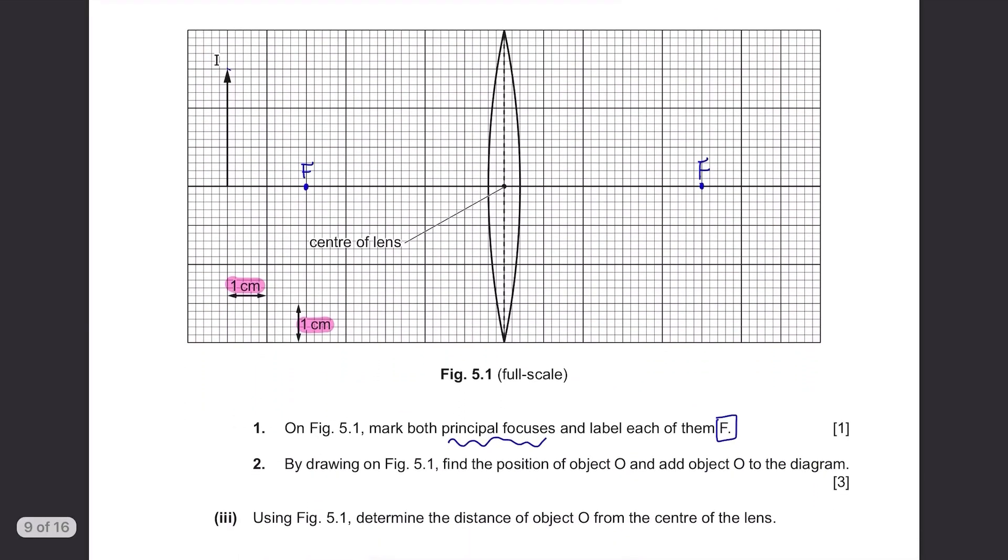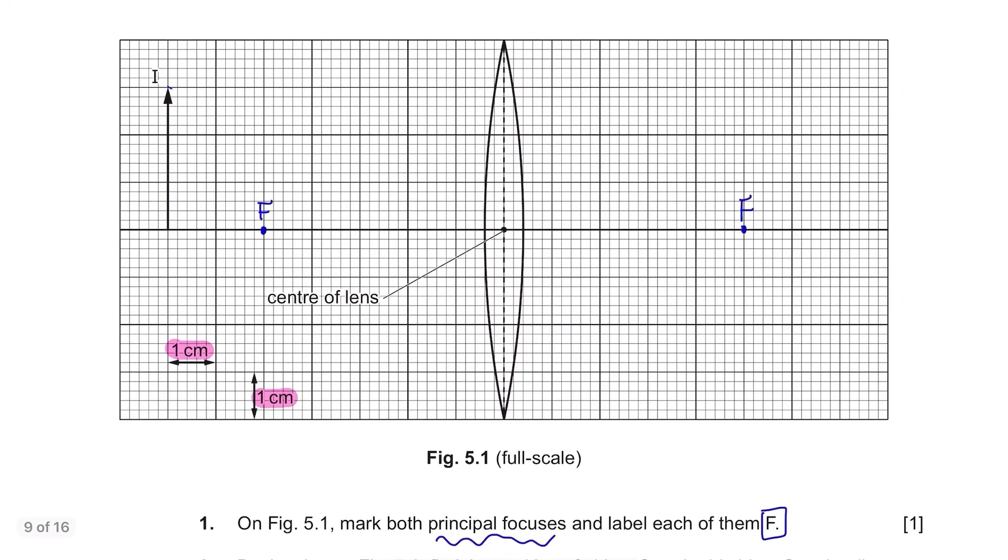By drawing on figure 5.1, find the position of object O and add object O to the diagram. This image is the final product after using the magnifying glass and we need to find where the original object was. First, draw a straight line from the top of I and through the lens to this principal focus. Next, draw a straight line from the top of I through the centre of lens. See where the top line intersects the middle line of this lens and draw a horizontal line to the left until it touches the second line. And this is where the object O was. This might be confusing because you're drawing the object instead of the image but it's the same process, the same lines you draw to find the image.